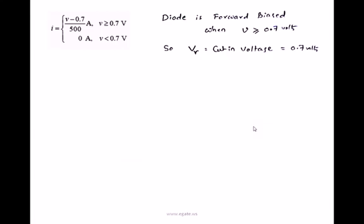First of all, from the given equation, the voltage current equation for the diode is I equals V minus 0.7 volts by 500 amperes whenever voltage is 0.7 volts. Here I is the current flowing through the diode, and V is the voltage across the diode terminals.